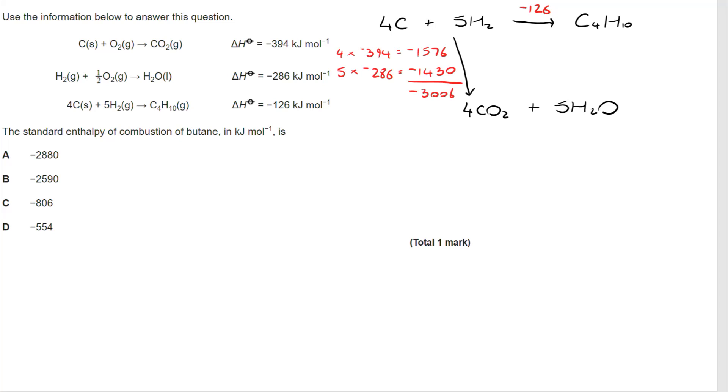When I put all of that together I've now got negative 3006 for that portion of the cycle. And if I combust C4H10 I make 4CO2 and 5H2O. So I've got my space to calculate x. Now I'm going to identify my two roots. I've got my blue root and my green root and I'm going to take the numbers from those two roots and put them in. So negative 3006 equals negative 126 plus x. Rearrange that to make x the subject and we have our answer x is negative 2880.